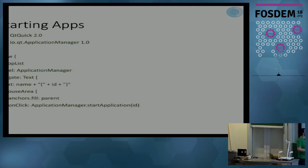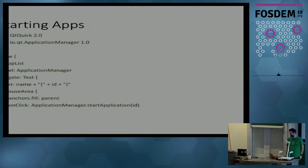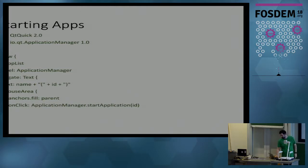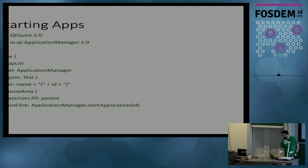So how do you start an app? A ListView is a view of a model — it shows you a list of things. The delegate is what's instantiated for every item in that model. The model itself is the Application Manager, which contains a list of all your installed applications. In the delegate, we show a text with the name and reverse DNS ID for the application. And if you click it, we tell Application Manager to start that application — that's a trivial launcher, and it works.